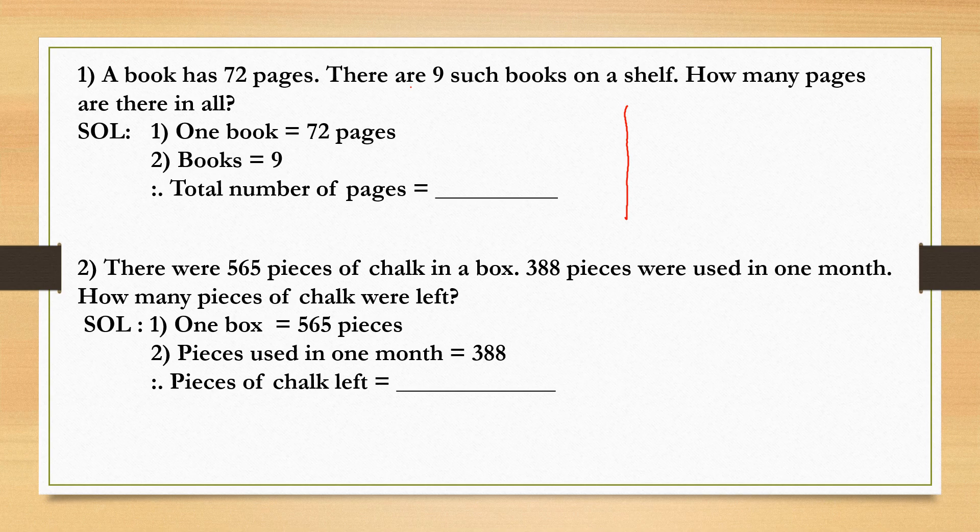The problem is you need to do multiplication. Let's write 1s and 10s. 72 multiplied by 9. Children, multiplication means repeated addition.